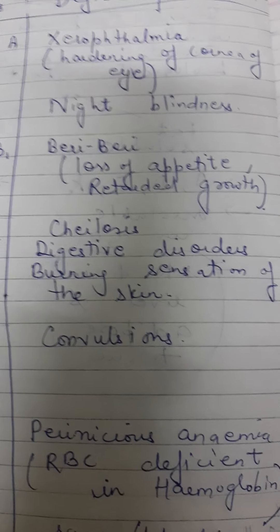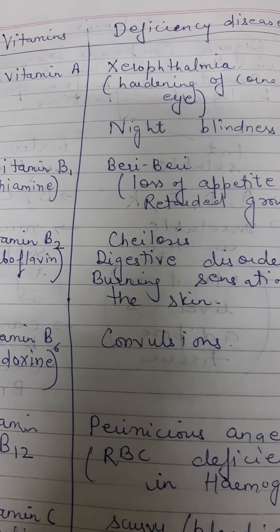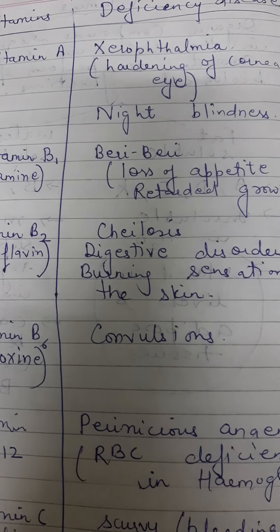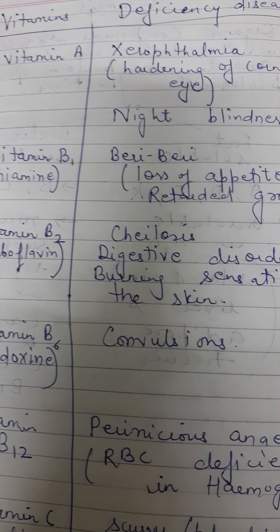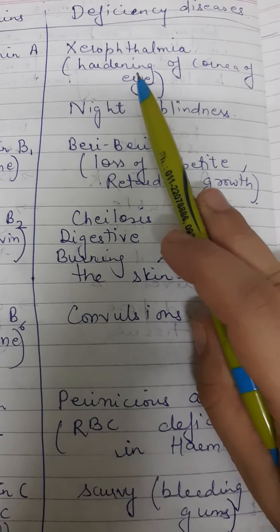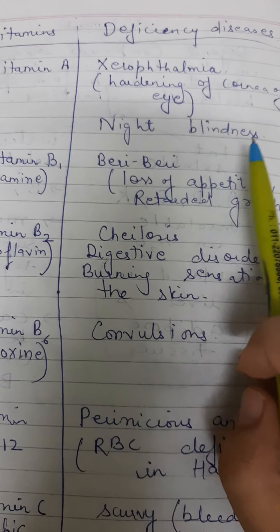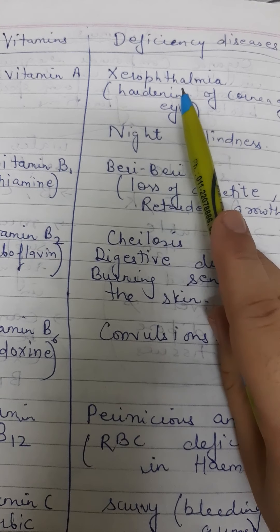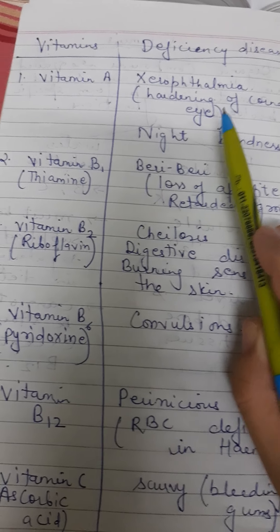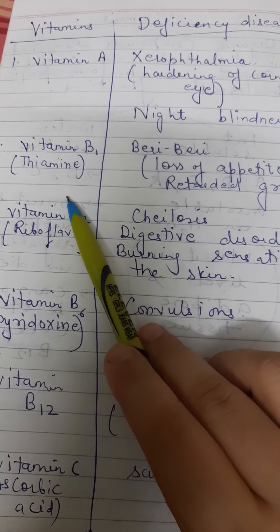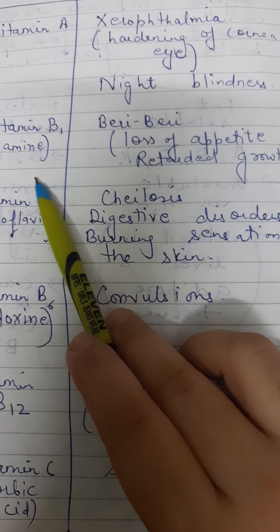Now we will discuss various vitamins and their deficiency diseases. Vitamin A — its sources include fish, carrots, butter, and milk. The deficiency diseases of vitamin A are xerophthalmia, which is hardening of the cornea of the eye, and night blindness. Xerophthalmia is an important additional point beyond the commonly known night blindness.